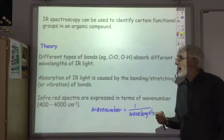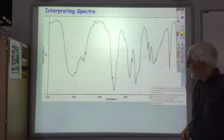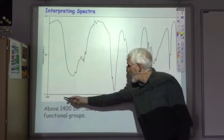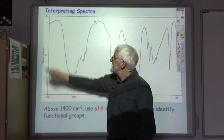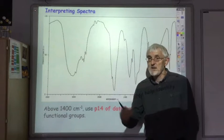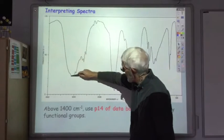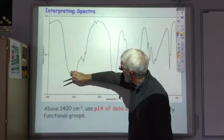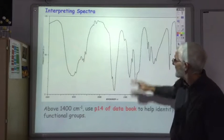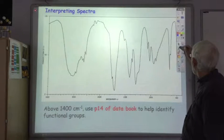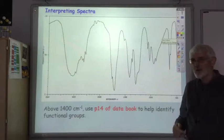So let's look at what an IR spectrum might look like. Along the bottom we've got the wave number, and up the side we've got the transmittance. 100% transmittance means there's no absorption of light. We can see there are various wave numbers where IR light has been absorbed. At advanced higher level, we basically ignore everything below 1400 — it's called the fingerprint region.